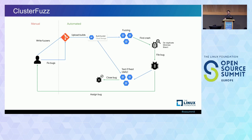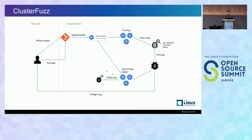The most interesting thing ClusterFuzz does is what happens when it finds a crash. It does a lot of things you'd have to do manually if running a fuzzer on your desktop. For instance, if you've ever run a fuzzer on your desktop, you've probably hit the same bug thousands of times. ClusterFuzz places a big emphasis on deduplicating bugs and making sure they're unique so it's not reporting the same crash over and over. It also minimizes the test case causing a crash to make it easier for the developer to debug. After doing all this, it bisects to find when the bug was introduced, files an issue in the issue tracker, and assigns it to a developer if it can figure out which commit introduced the bug.